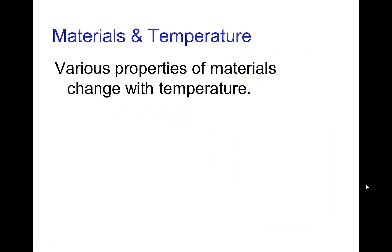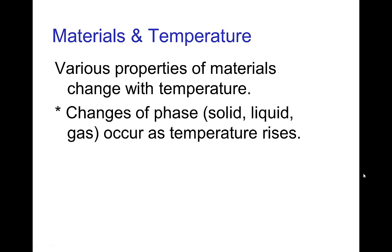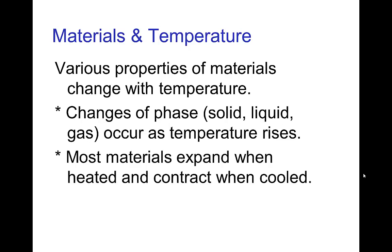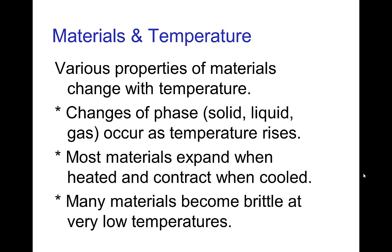The properties of materials vary with temperature. One example is a change of phase: solid ice, as we raise the temperature, becomes liquid water, and then as we raise the temperature further it boils and becomes steam. Another property is that most materials tend to expand when heated and contract when cooled. Many materials also become brittle at very low temperatures, and other properties such as color can also vary with temperature.